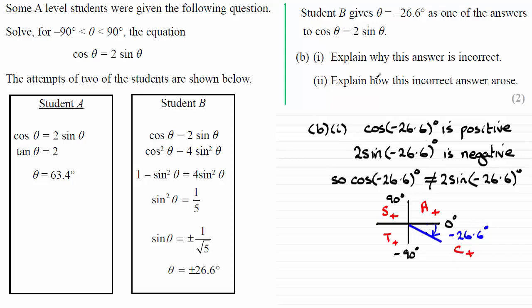Now for the second part, we've got to explain how this incorrect answer arose. Well that's quite easy. It came about from squaring both sides of this equation. Okay, it led to two positive values here. If you square something, we end up with a situation like this, where we've got a choice of values for theta.